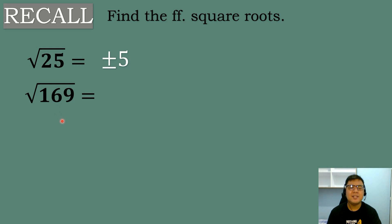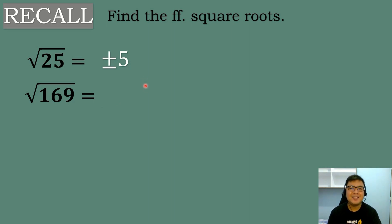Next: What is the square root of 169? We will think of a number that once multiplied by itself, the answer will be equal to 169. That number is equal to 13, because 13 times 13 is equal to 169. So the answer will be positive or negative 13.